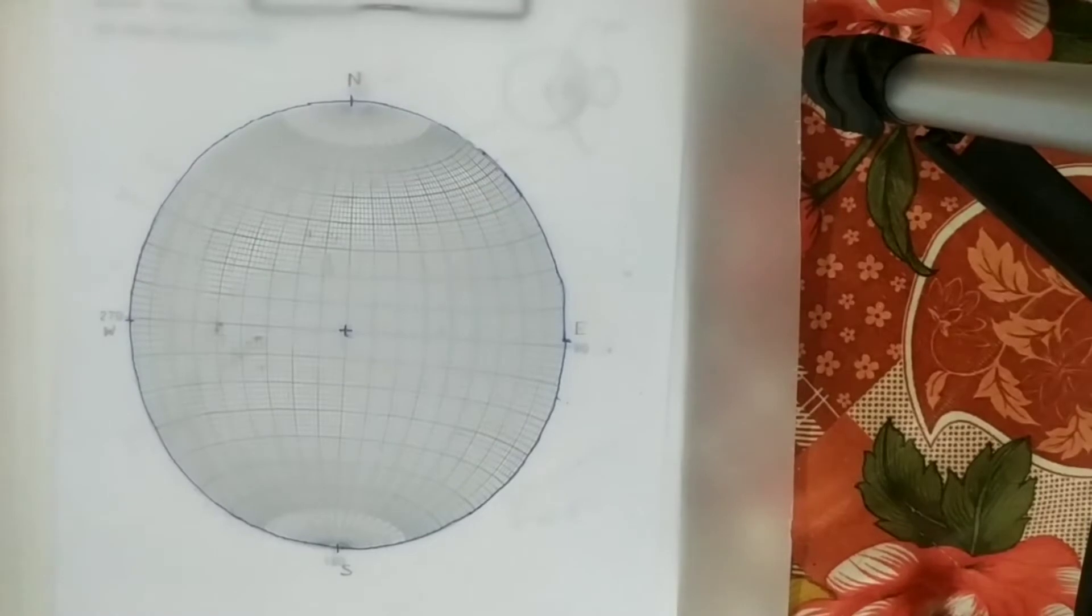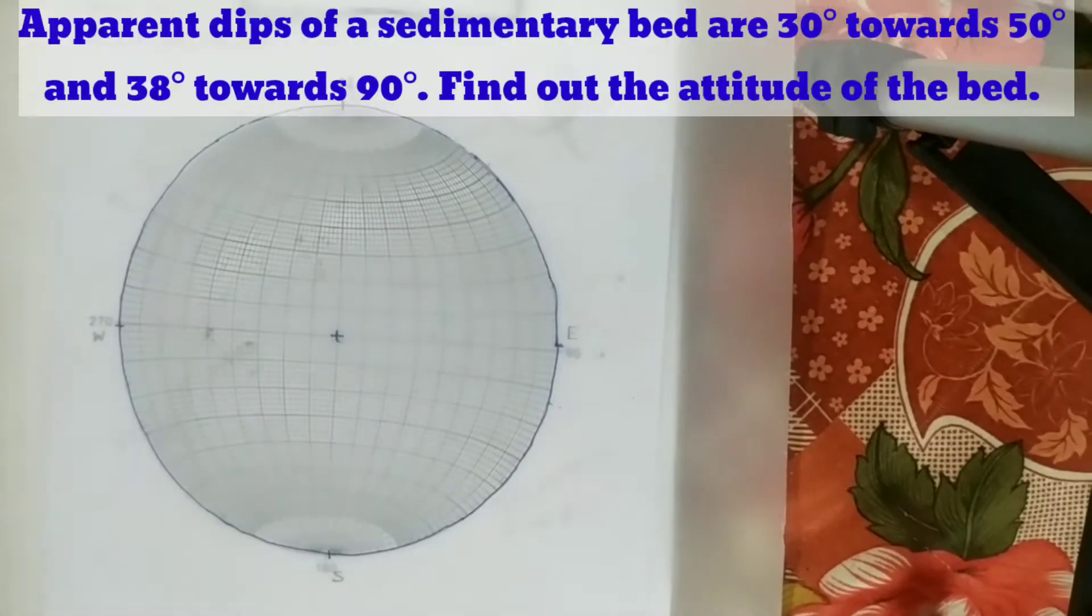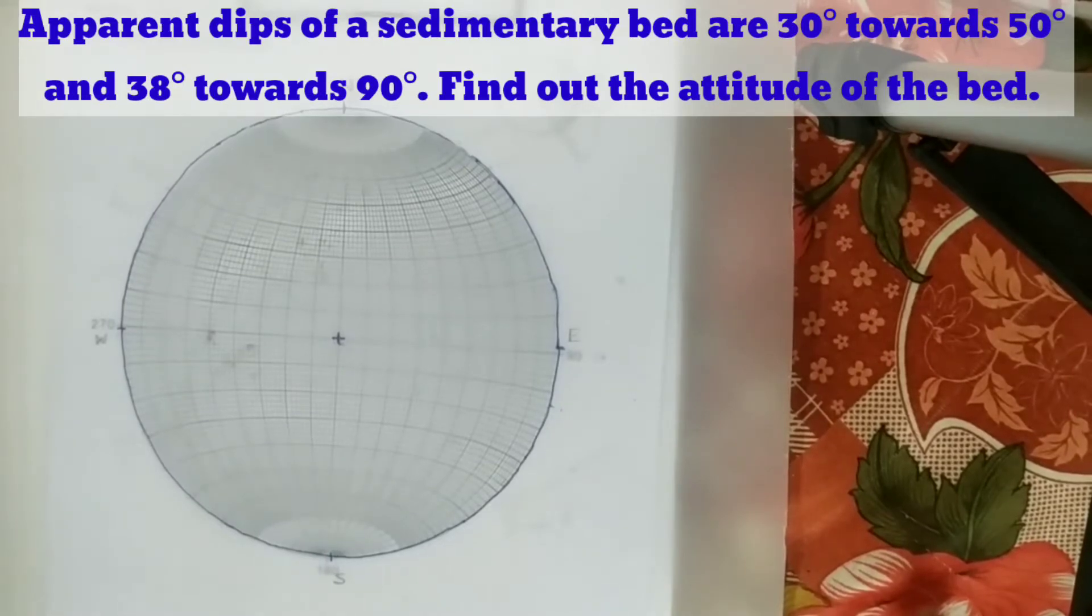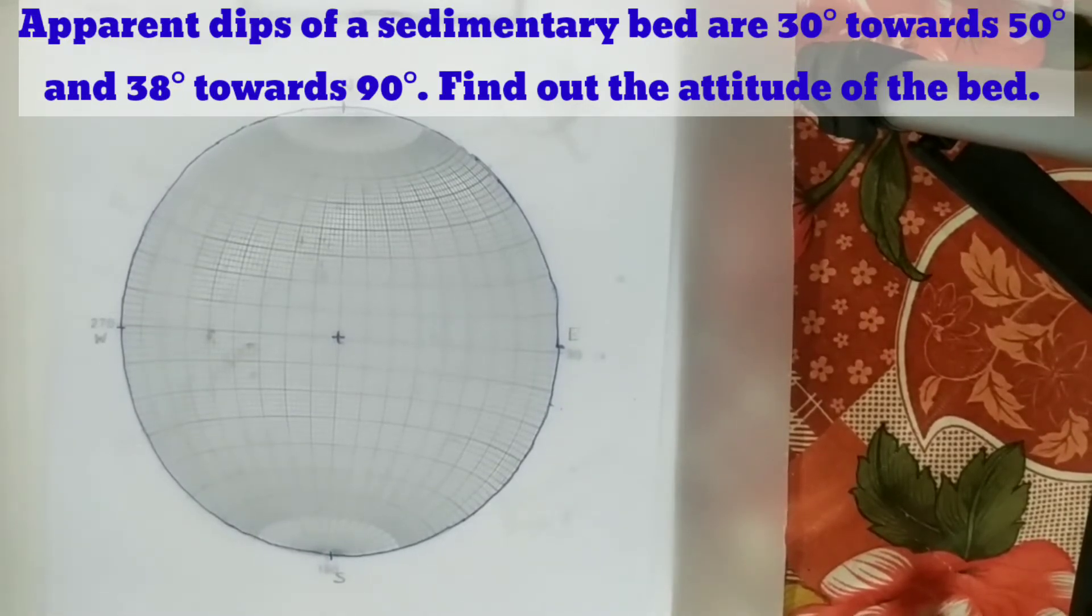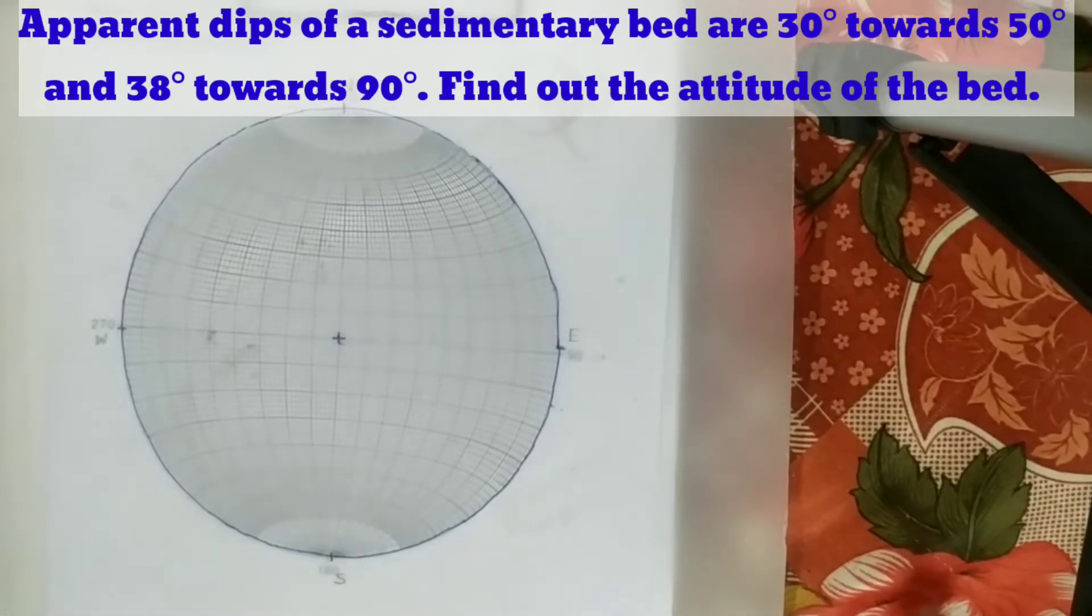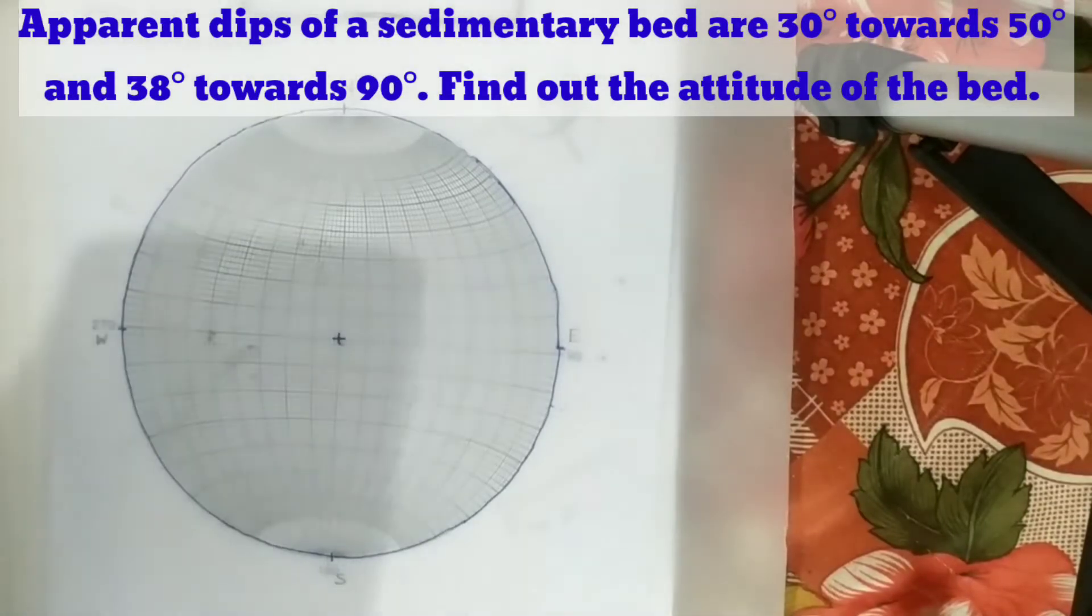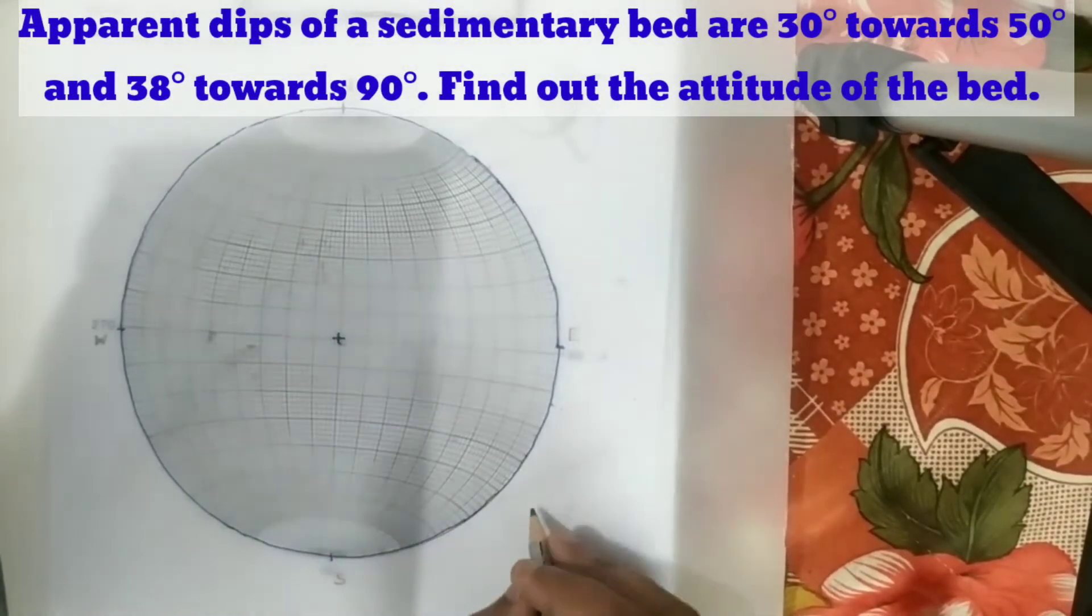Here the problem is: apparent dips of a sedimentary bed are 30 degrees towards 50 degrees, and 38 degrees towards east, that is towards 90 degrees. First we have to write the two information: